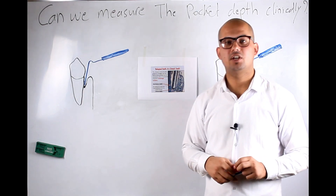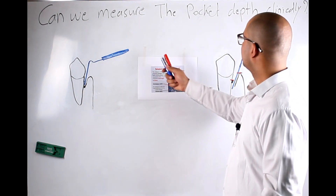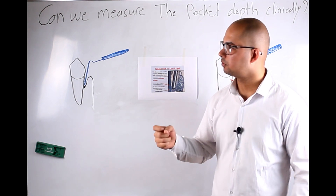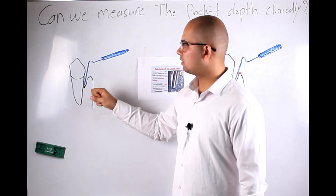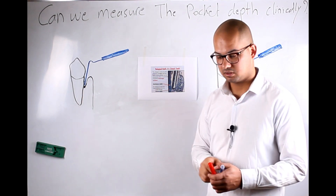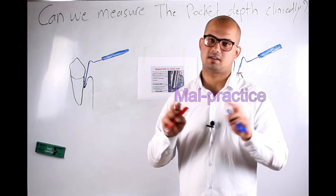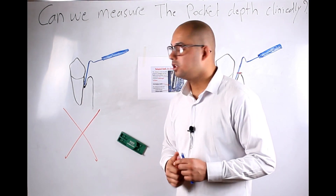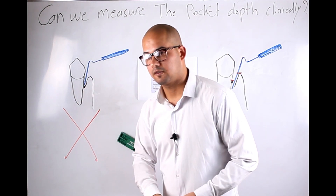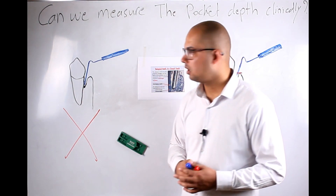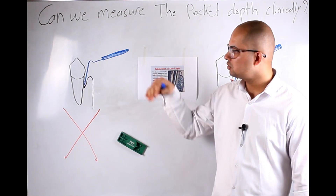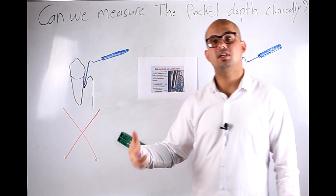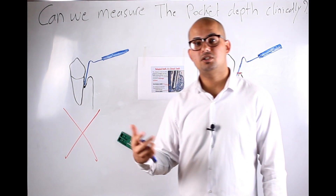Can we measure pocket depth clinically? We can measure it — it's an easy procedure: bring your periodontal probe, insert it into the gingival sulcus, and take the distance between the base of the pocket and the margin. This is what we call it in many practices. But this is absolutely wrong, because we don't know where the base of the pocket is — we can't stop there. For that reason, we can't truly measure pocket depth clinically.